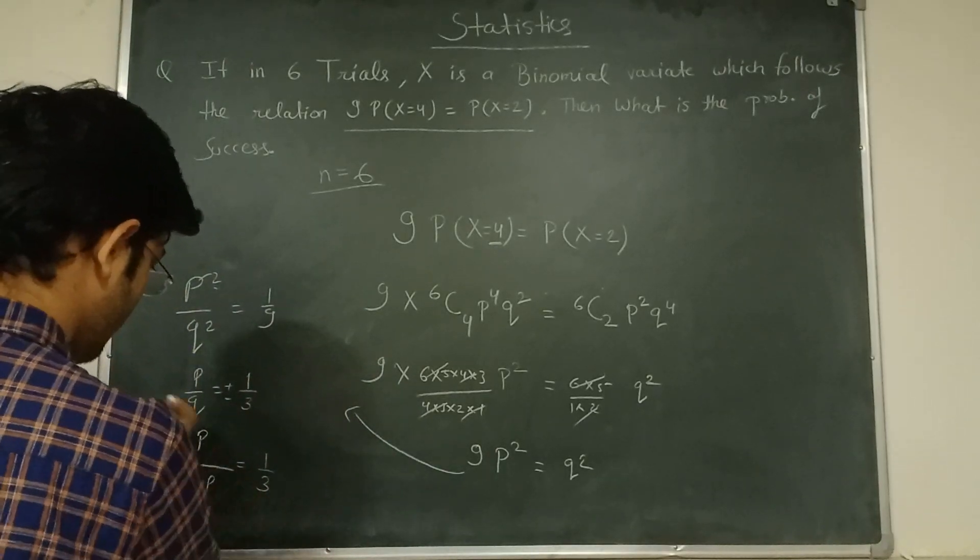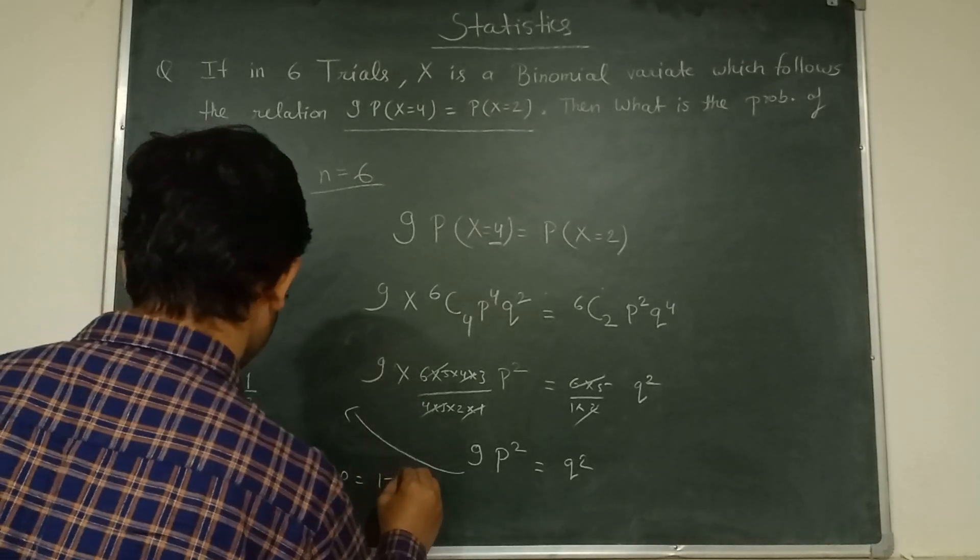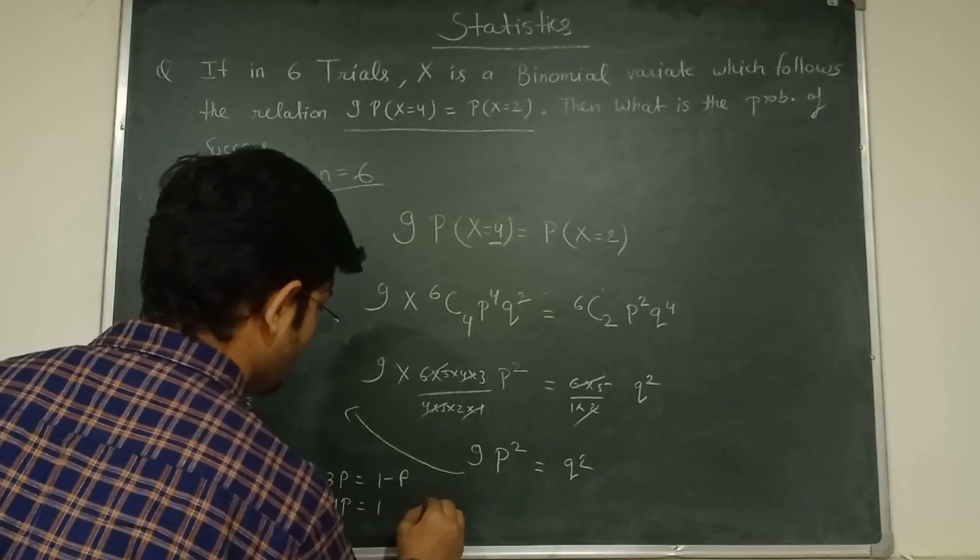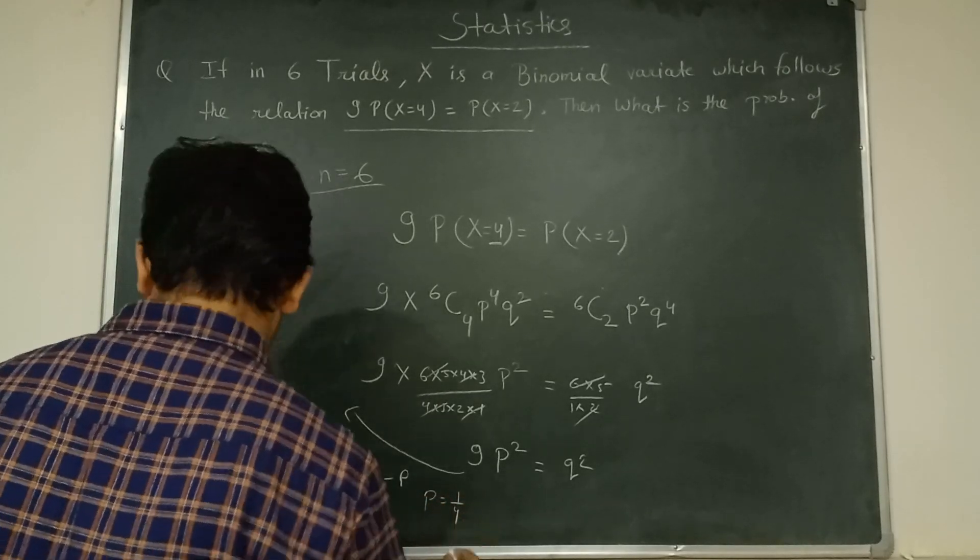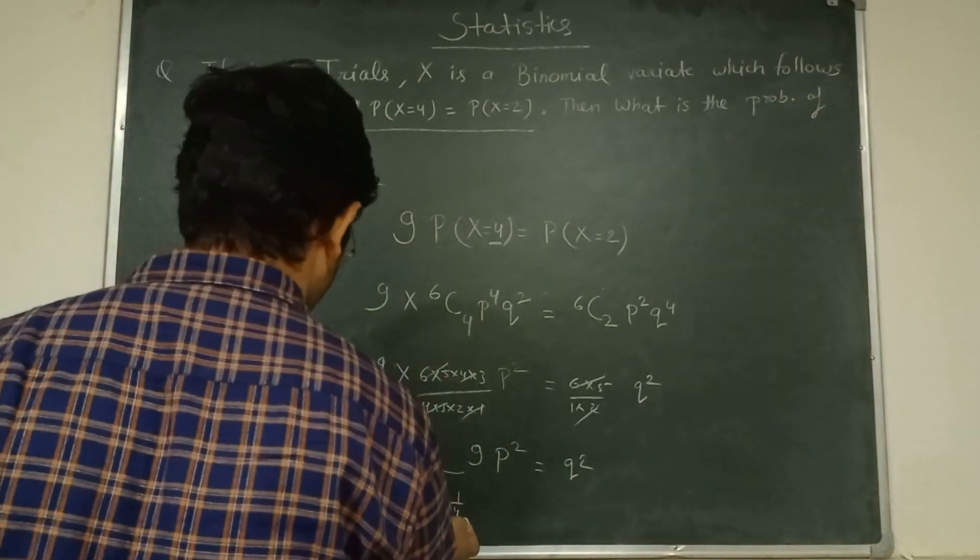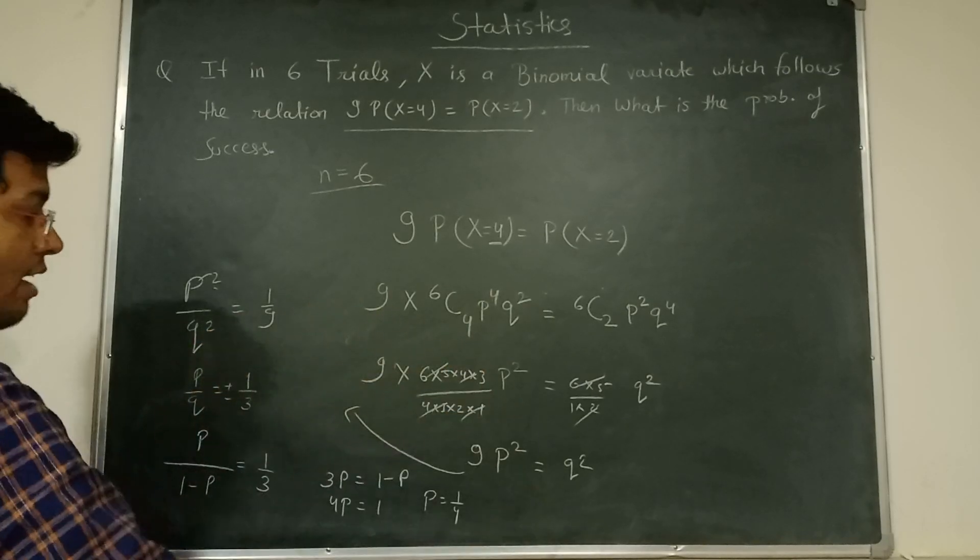This becomes 3p = 1-p, so 4p = 1, and p = 1/4. So one value of p is 1/4. If we take minus 1/3, then another value will come, but this will be minus 1/2.